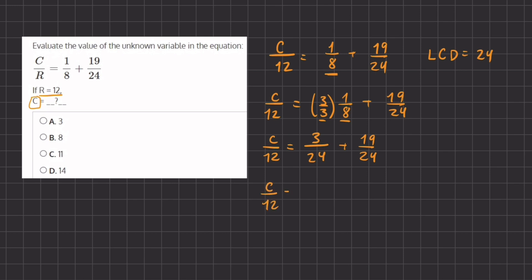And so we have on the right hand side 3 plus 19, which gives us 22 divided by 24.